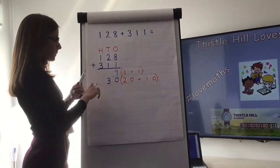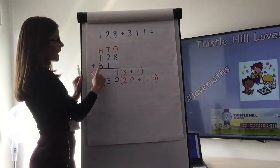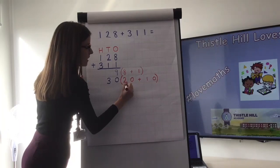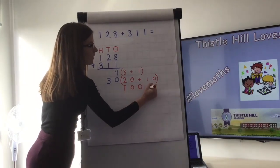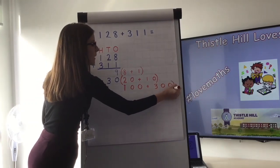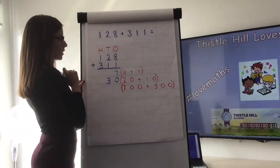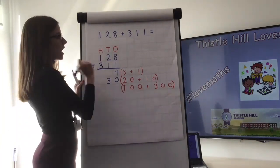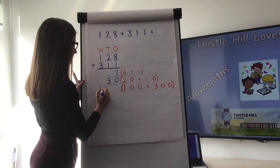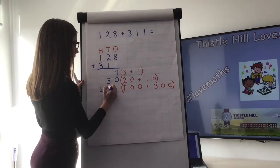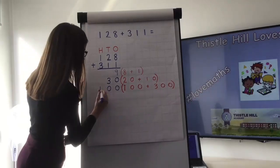The final column is our hundreds column, which is 100 add 300, so we write 100 add 300 and place that in brackets. We know that 100 add 300 is 400, and because it's a hundreds number it goes in the hundreds column. Then we draw a line underneath to get ready for our next step.